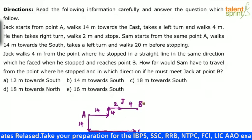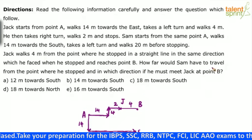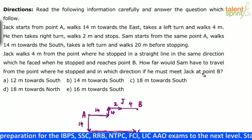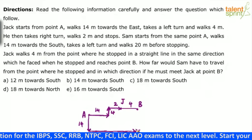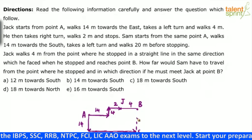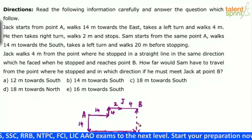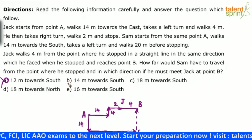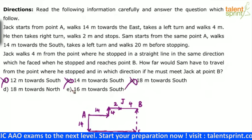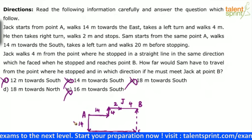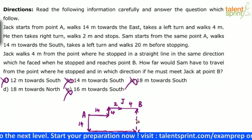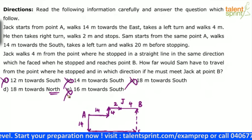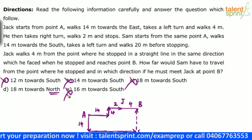Now the question is: how far would Sam have to travel from the point where he stopped, and in which direction, if he must meet Jack at point B? Sam has to meet Jack at point B, which means Sam should go in the north direction. So options A, B, C and E get eliminated. The only option which has got north as a direction is option D. So that has to be the answer.